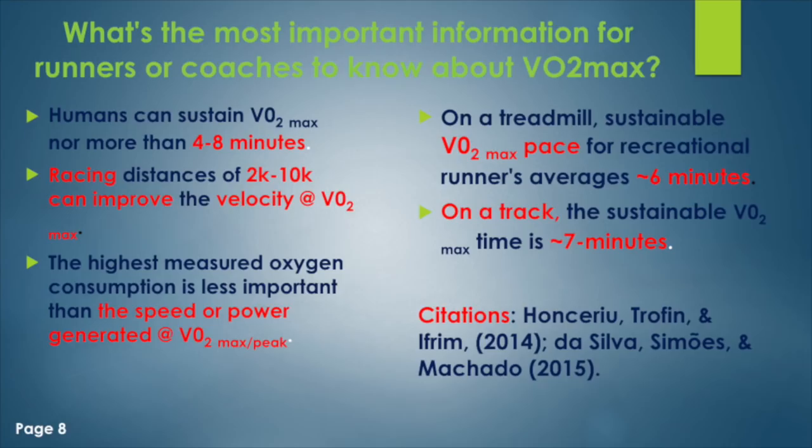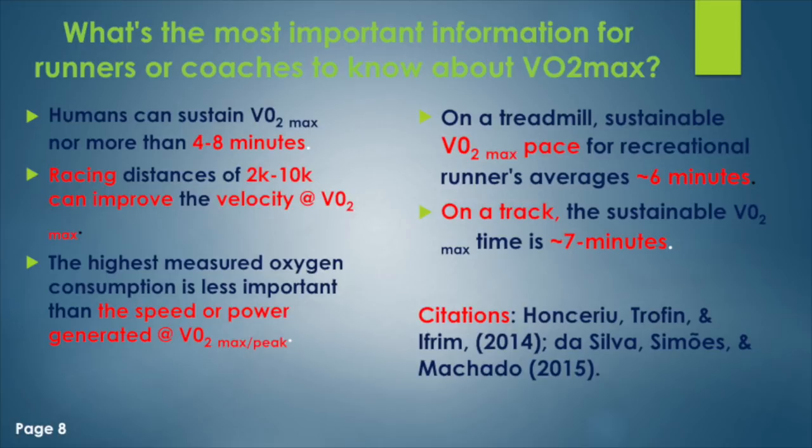On the track, VO2 max duration is about a minute longer — roughly seven minutes. There's a skill to running on the treadmill; research shows elite runners are actually inefficient on treadmills. It's a neuromuscular coordination issue: on a treadmill the belt moves under you, so you have to pull back smoothly rather than push off as you do on the ground. On the track, people can sustain VO2 max typically closer to seven minutes.